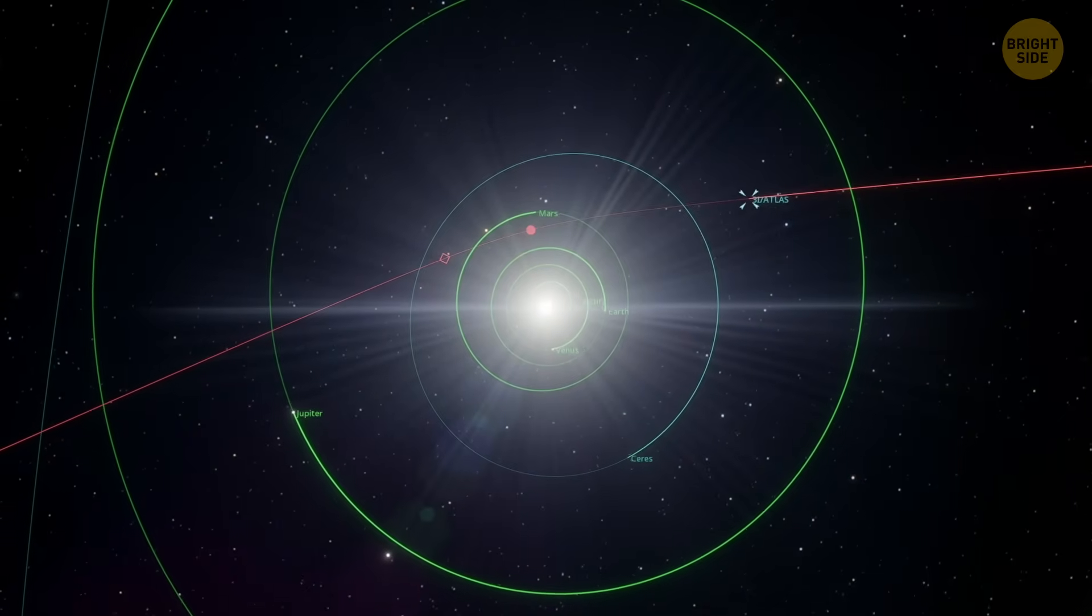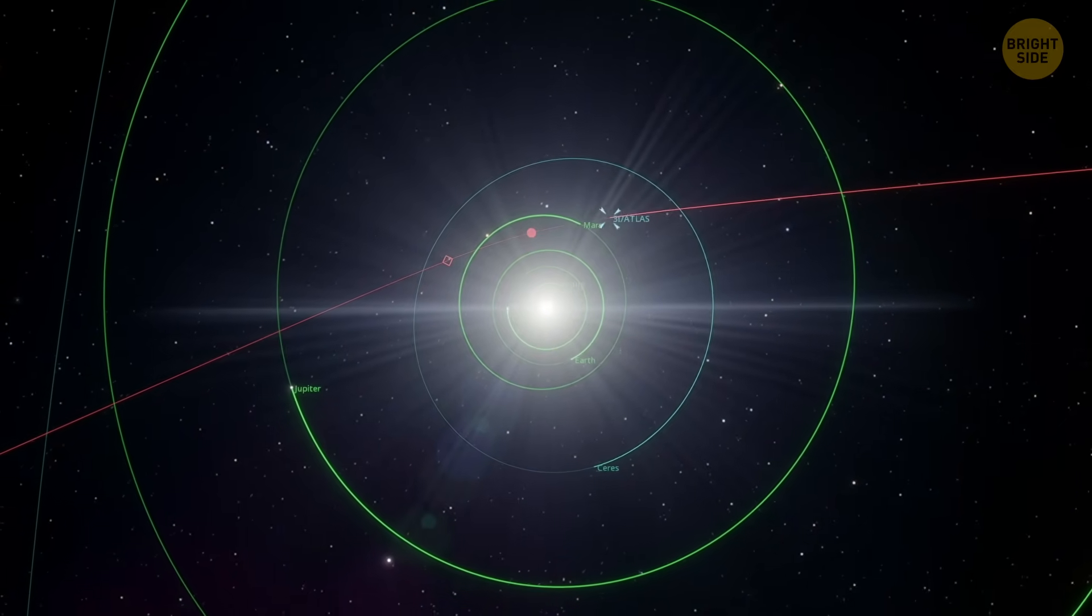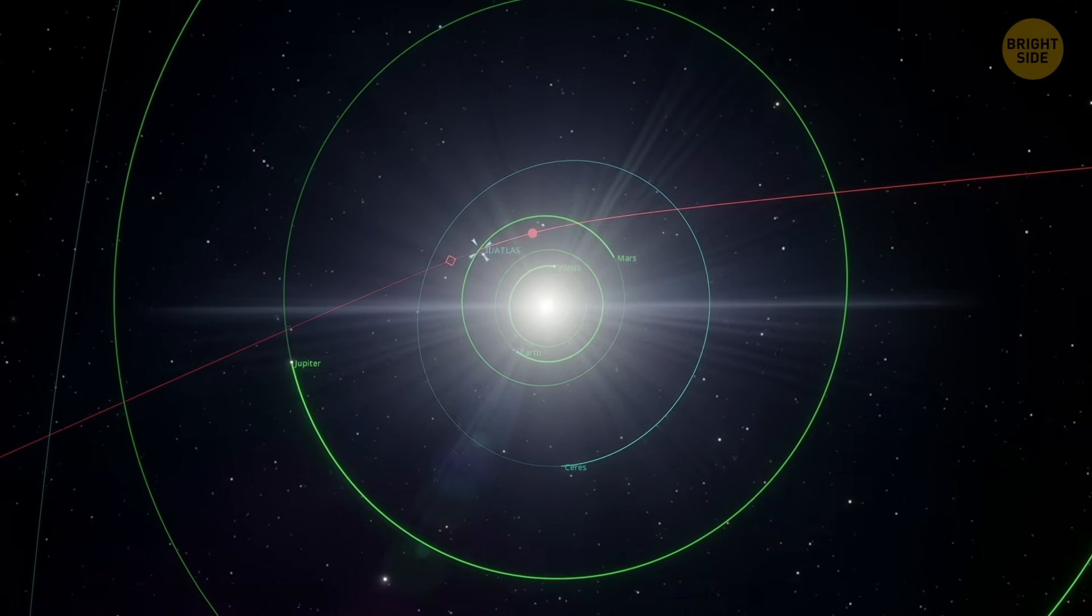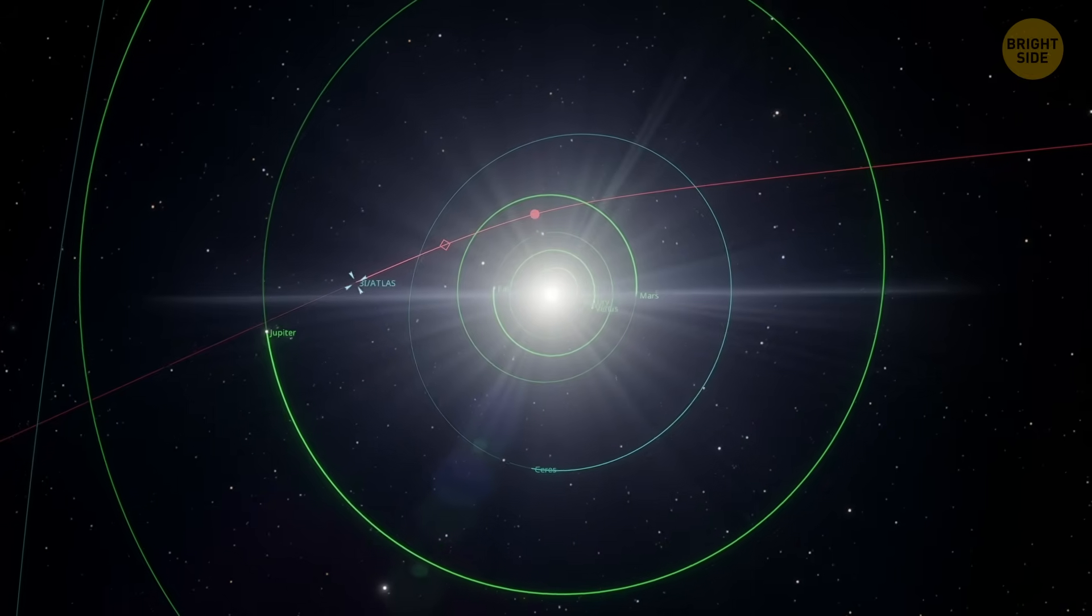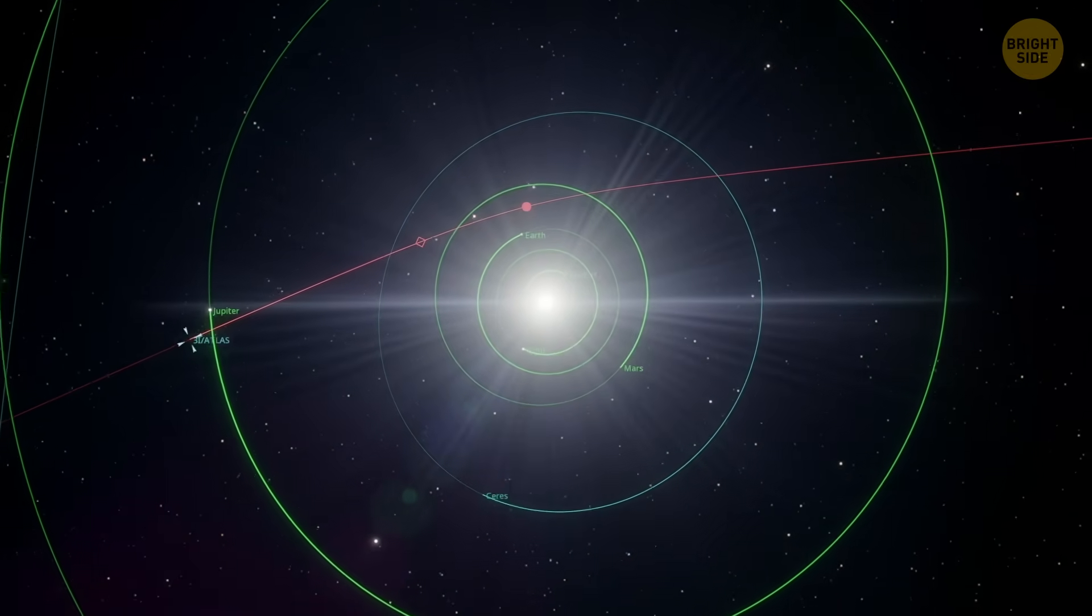It also passes close to Venus, Mars, and Jupiter. And these are the planets that might be especially interesting for an outside civilization to observe.